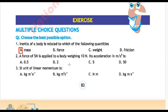Next question: A force of 5 Newton is applied to a body weighing 10 Newton. Its acceleration in meter per second square is: Option A: 0.5, Option B: 2, Option C: 5, Option D: 50. Correct answer is Option C: 5.